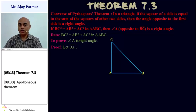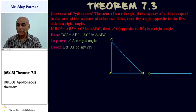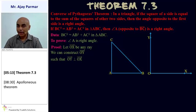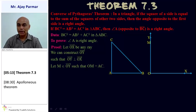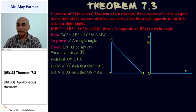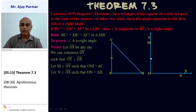To prove this, we construct certain things. Let ray OX be any ray, and we construct ray OY perpendicular to ray OX, so angle XOY is a right angle. Let M be a point on ray OY such that OM = AC, and let N be a point on ray OX such that ON = AB. That means AC = OM and AB = ON.